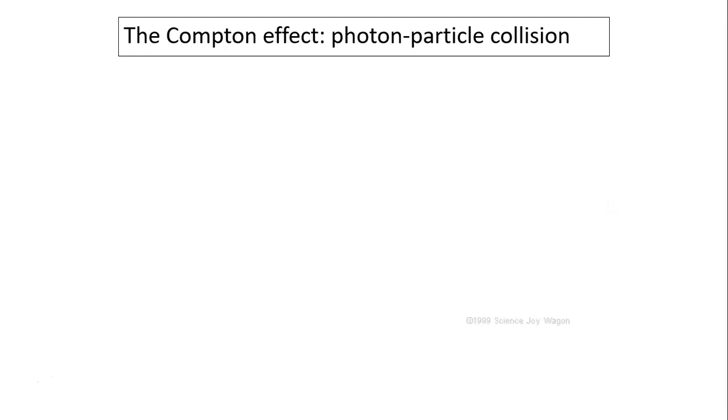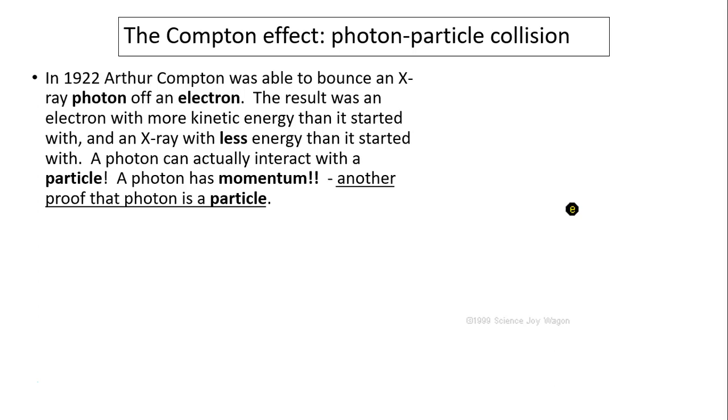Compton, in fact, it's a photon particle collision. 1922, Arthur Compton was able to bounce an x-ray photon off an electron. So, again, light is interacting with matter. The result was an electron with more kinetic energy than it started with. A photon can actually interact with a particle. So, photon has momentum. Another proof that a photon is a particle. So, now we have two proofs that light is a particle. One is photoelectric effect. The other one is Compton effect. So, here is the animation of a wave interacting with a particle.